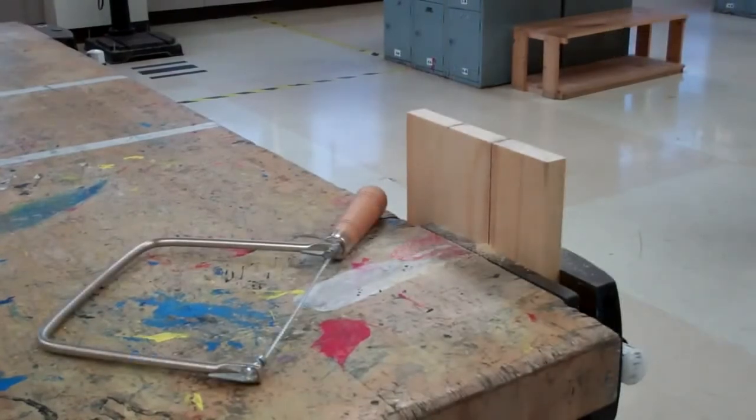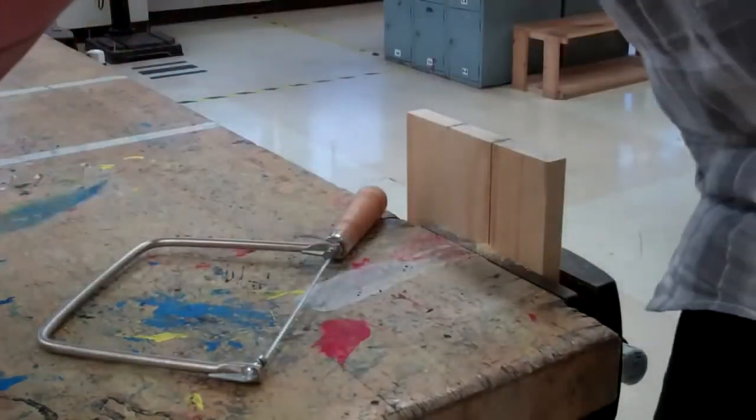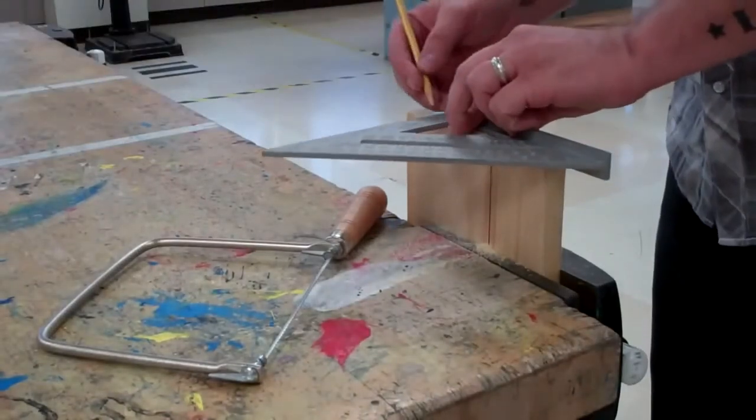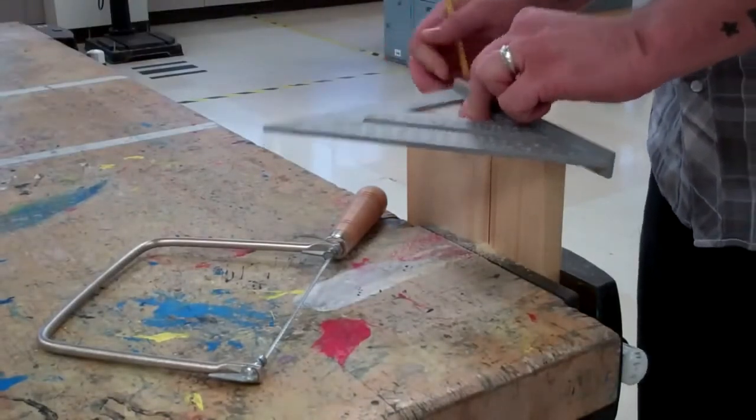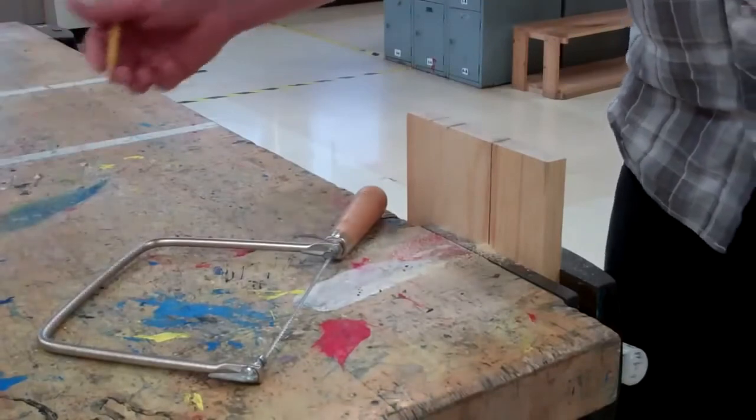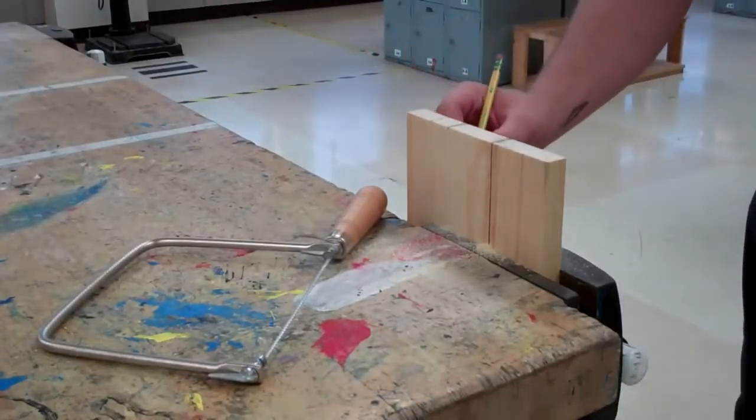To cut curvy or wavy lines, we use the same steps. I will take my speed square, give myself a guideline across the top, and also draw my curve on the face of the board.